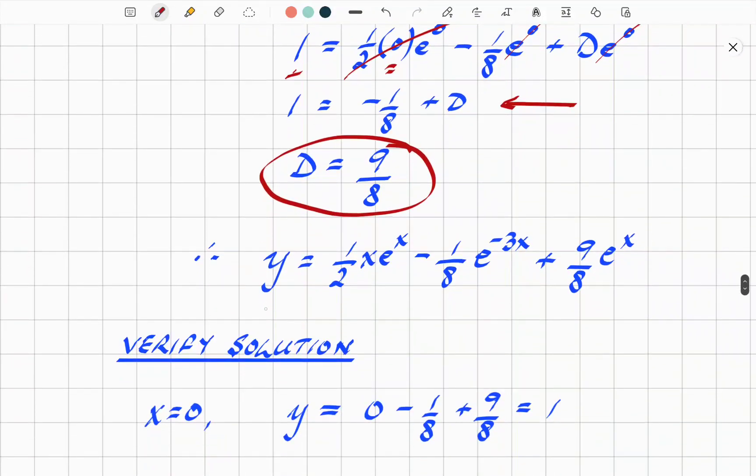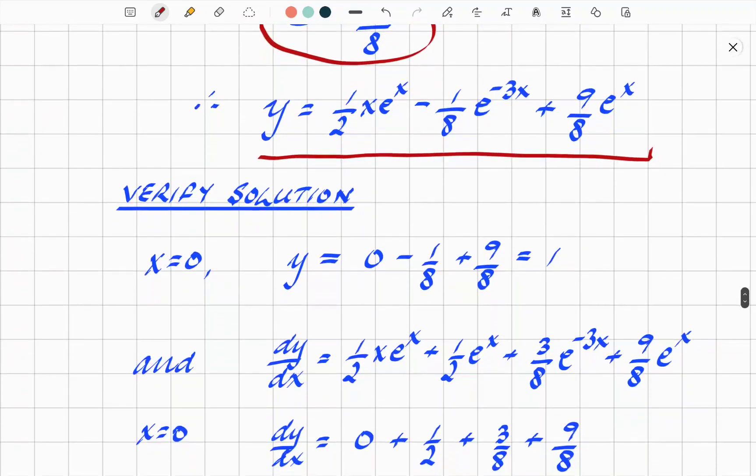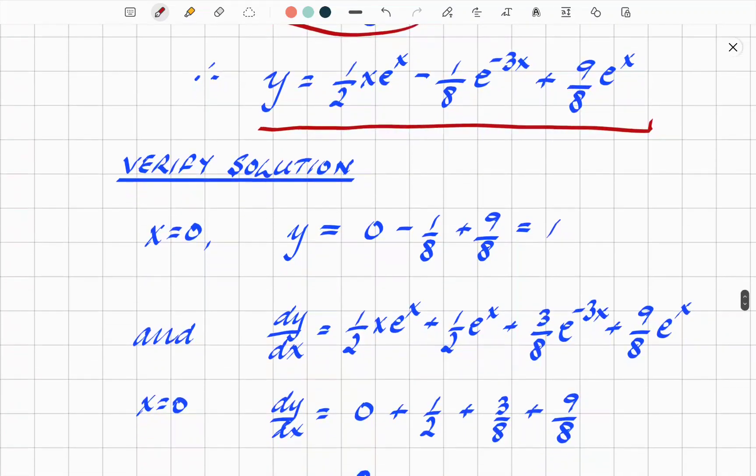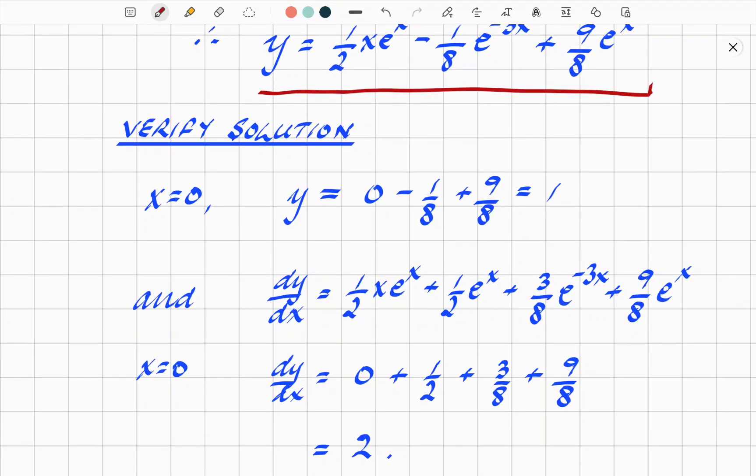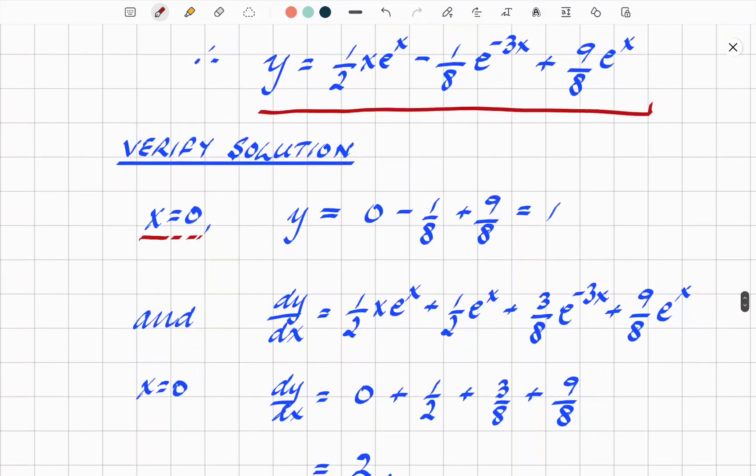Therefore the actual solution to the question, now that we know what D is, this is the function that the question was looking for: y = (1/2)xe^x - (1/8)e^(-3x) + (9/8)e^x. It's always good practice, whether it's a STEP question or a particular complex further maths question, is to verify your solution. When x = 0, we evaluate what y should be. y equals zero - 1/8. Remember e^(-3x) goes to 1 and e^x goes to 1. So zero - 1/8 + 9/8, and that becomes 1. So that is correct. That statement at least works.